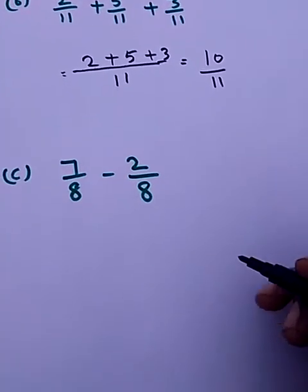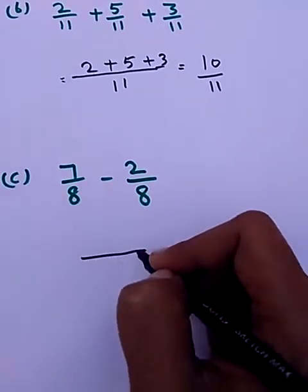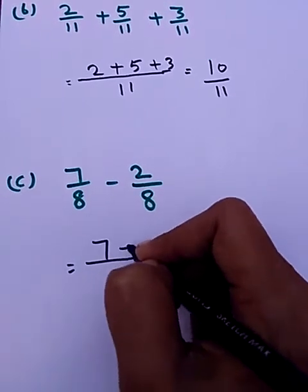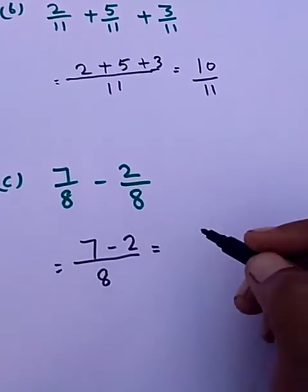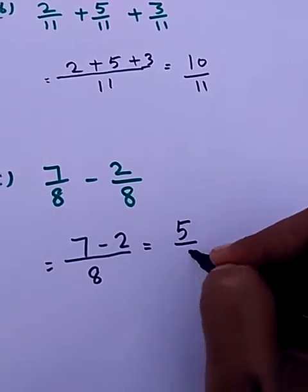Come to Part C: 7/8 minus 2/8. Denominator is same here. Now subtract the numerators. 7 minus 2 is 5, so 5/8.